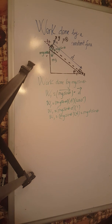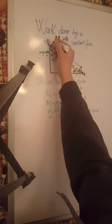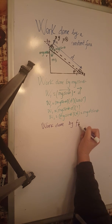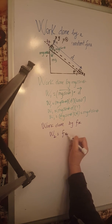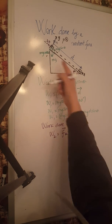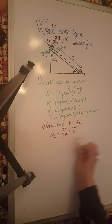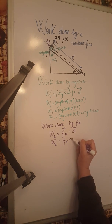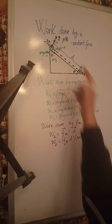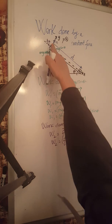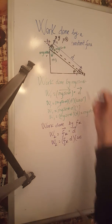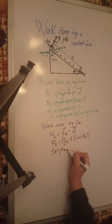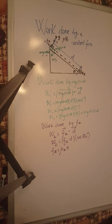Now the work done by the force of friction, shown in purple — call it W2 — is the force of friction dot product with the same displacement d. This gives the magnitude of the force of friction times the magnitude of d times the cosine of the angle between them. The displacement is down the ramp and the force of friction is up the ramp, so the angle between them is 180 degrees. The magnitude of the force of friction is mu k times n, so we need to determine the normal force.